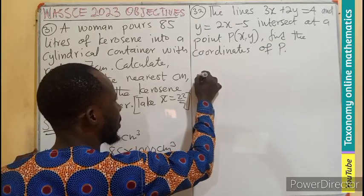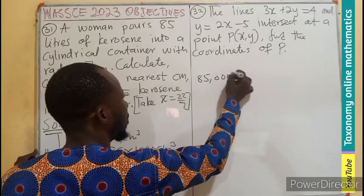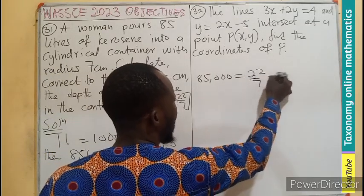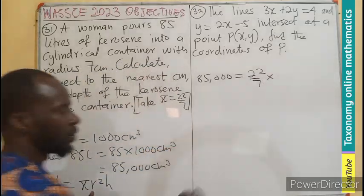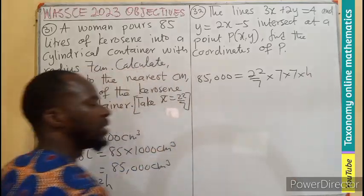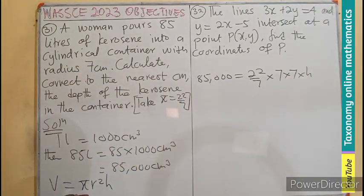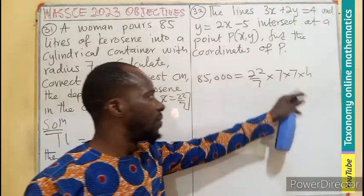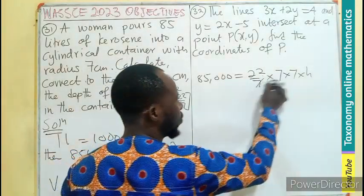We have 85,000 equals π, which is 22/7. The radius, which is 7 times 7 times the height. Per substitution, the radius is 7, so 7 squared, meaning 7 times 7. I believe this will cancel this.